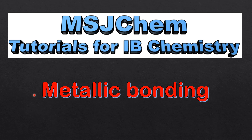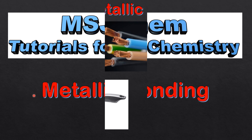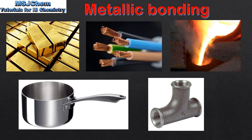This is MSJChem. In this video I'll be looking at Metallic Bonding. Let's start by looking at the properties of metals. Metals such as this gold are shiny unless they become tarnished in air.